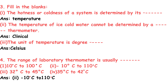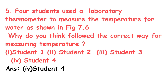Third, the unit of temperature is degree — answer: Celsius. Question 4: The range of a laboratory thermometer is usually — options: 10°C to 100°C, 10°C to 110°C, 32°C to 45°C, or 35°C to 42°C. The correct option is option 2: minus 10°C to 110°C.